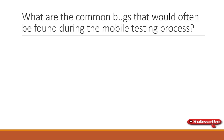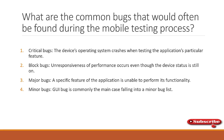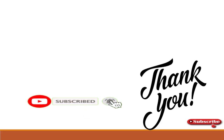What are the common bugs you often find during mobile application testing? This is frequently asked for experienced persons. You can explain critical, blocker, major, or minor bugs you have encountered. For example, a critical bug is when the application crashes automatically during certain operations. Responsiveness issues — such as a checkout page not opening or hanging on the previous page — are blocker bugs. You can distinguish and explain the different types of bugs you have experienced.